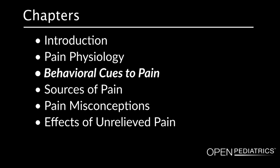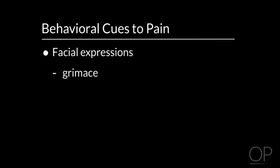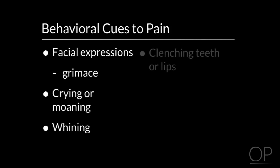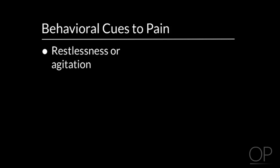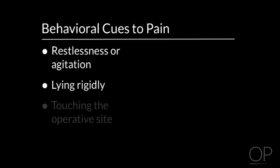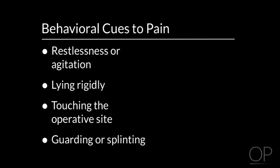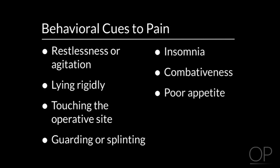Behavioral cues to pain. There are many ways a child will express his or her pain. These cues are demonstrated by both verbal and nonverbal patients. Some of the ways a child may express their pain are facial expressions such as a grimace, crying or moaning, whining, clenching teeth or lips, opening eyes wide, yelling or screaming, restlessness and agitation, lying rigidly, touching the operative site, guarding or splinting, insomnia, combativeness, poor appetite, and withdrawal.